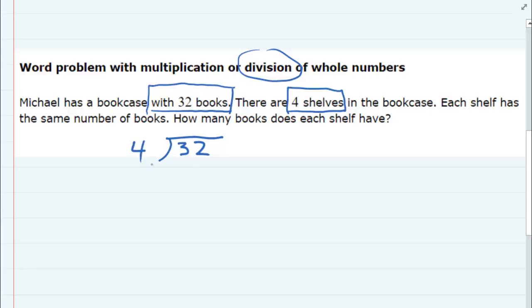So four doesn't go into three, but into 32. Four goes eight times. Eight times four is 32. So it divides evenly. There are eight books on each one of those four shelves, so that we have a total of 32 books.